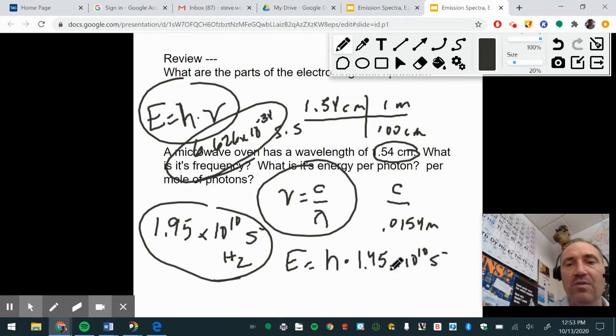So then what you're going to do is you're going to take your answer from the last one times 6.626E negative 34, and you get 1.29 times 10 to the negative 23rd. And so it's energy, so it would be measured in joules. Just remember, energy's in joules.